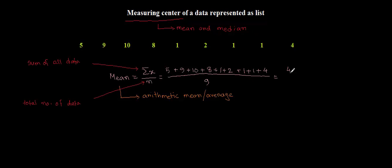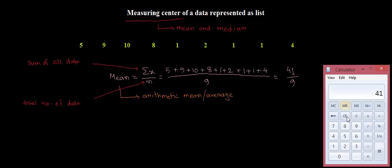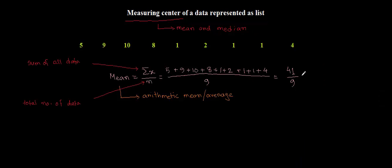So we have 41 divided by 9. 41 divided by 9 equals 4.5 repeating. I want to write the answer to two decimal places, so I'll write 4.56. The mean value for this data list is 4.56 to two decimal places.